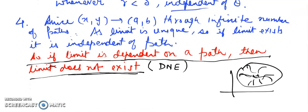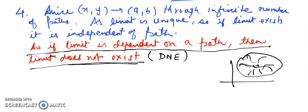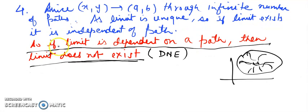Now the last remark is very important. A number of questions are based on this remark. Since we know that (x,y) towards (a,b) can be approached from infinite number of paths, and the limit is existing and should be unique, the limit is independent of path.